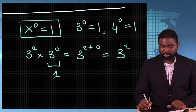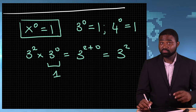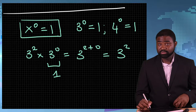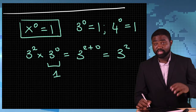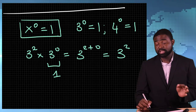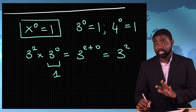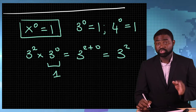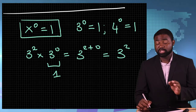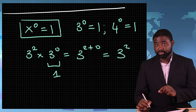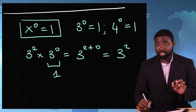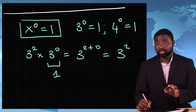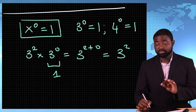Because anything multiplied by 1 remains itself — A multiplied by 1 is A, John multiplied by 1 is John, Mary multiplied by 1 remains Mary.